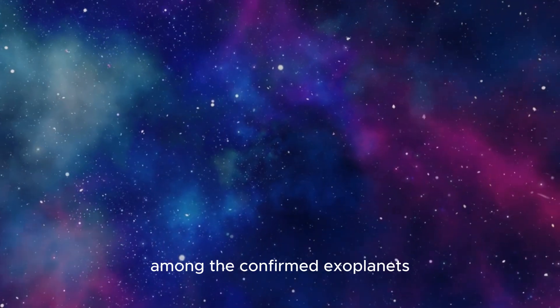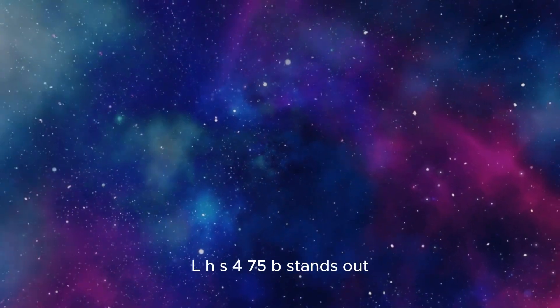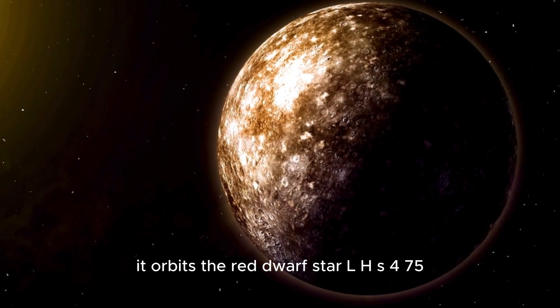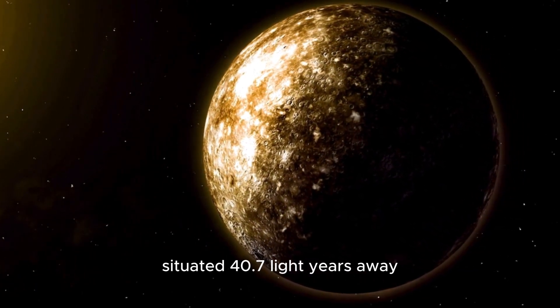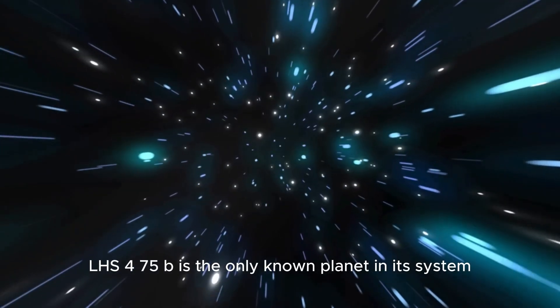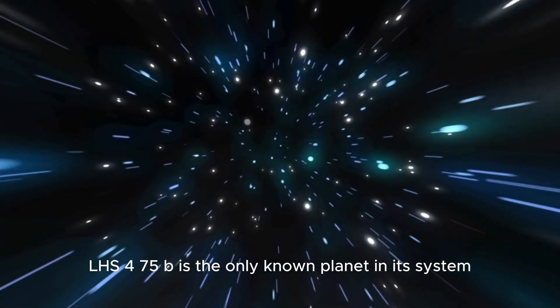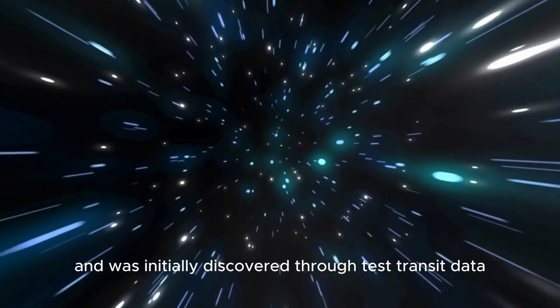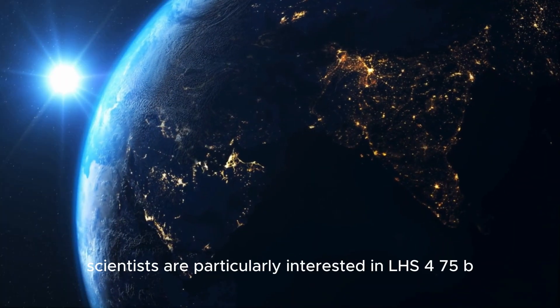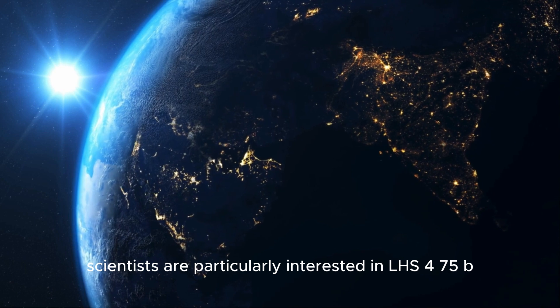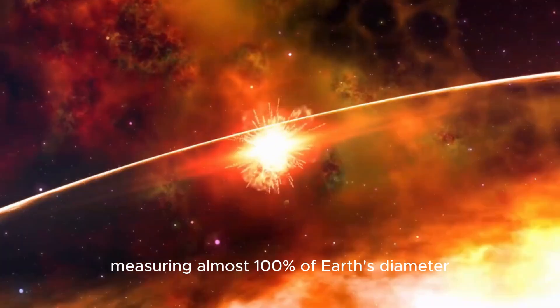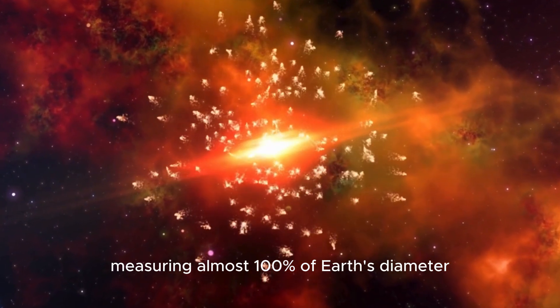Among the confirmed exoplanets, LHS 475b stands out. It orbits the red dwarf star LHS 475, situated 40.7 light-years away in the Octans constellation. LHS 475b is the only known planet in its system, and was initially discovered through TESS transit data before being confirmed by JWST. Scientists are particularly interested in LHS 475b because it is nearly identical in size to Earth, measuring almost 100% of Earth's diameter.